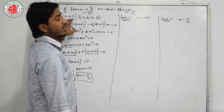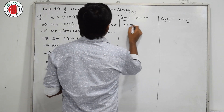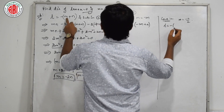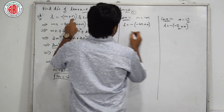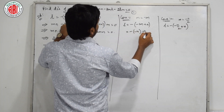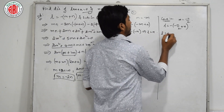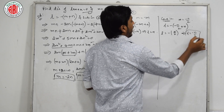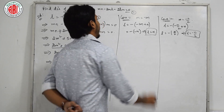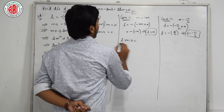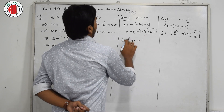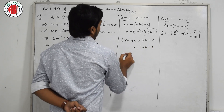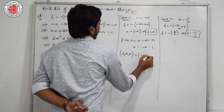Now let us substitute the value of M back. L equals minus of (M plus N). For case 1, M equals minus 2N, so L equals minus of (minus 2N plus N) equals minus of (minus N) equals N. So L is N. Now writing L : M : N, we get N : minus 2N : N. Cancelling N, that becomes 1 : minus 2 : 1. Therefore the DRs are (1, minus 2, 1).